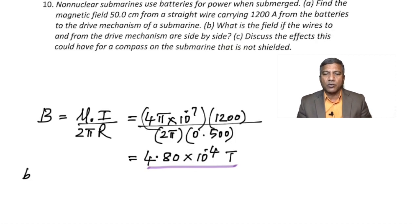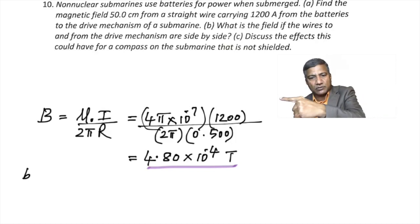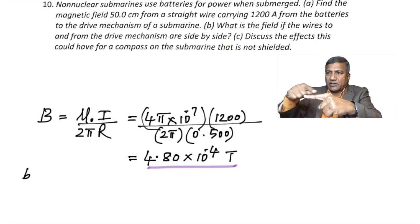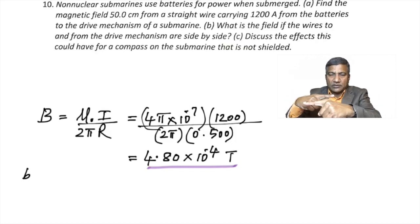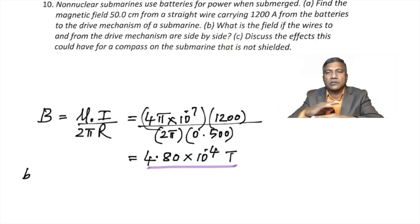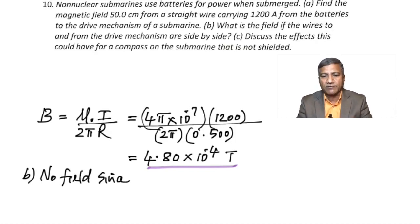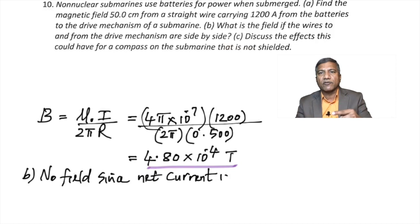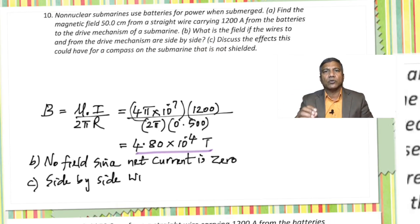Part B: if the wires to and from the drive mechanism are side by side, the currents flow in opposite directions, producing magnetic fields that cancel each other — so the net field is zero. Part C: this means a compass on the submarine will not be affected and will show the correct direction, since the magnetic fields from the two cables cancel out.